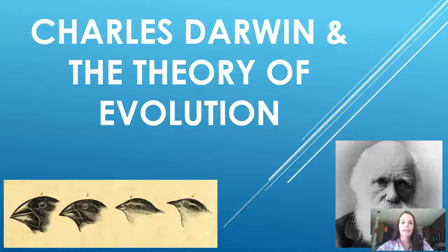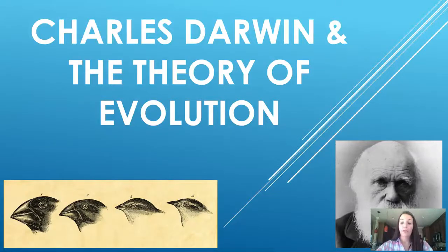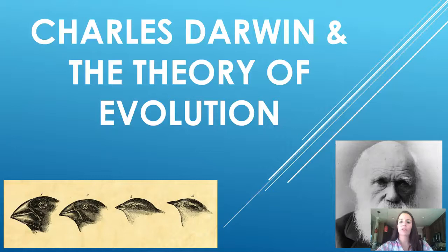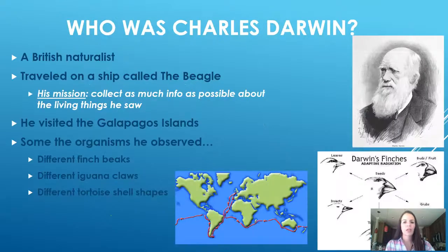Hi guys. These are your theme 7 evolution video notes. We're going to briefly talk about Charles Darwin, but then we're going to talk about natural selection and how different species were formed.